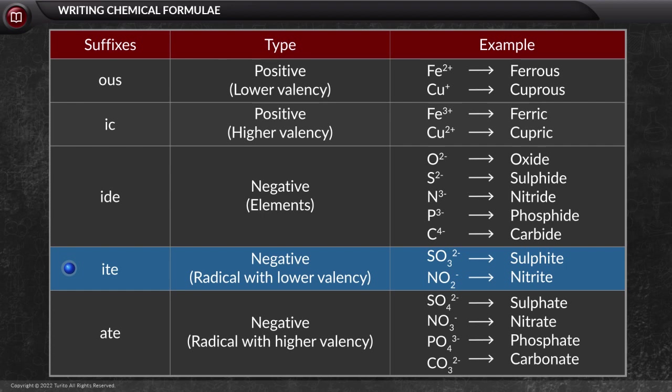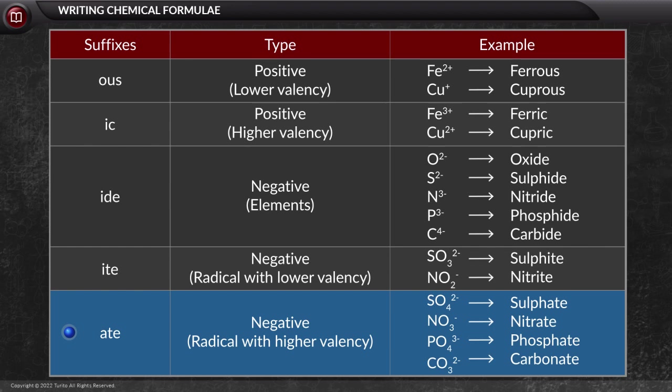For negative radicals with lower valency of the element, suffix 'ite' is used like in sulfite and nitrite. Similarly, with higher valency of element, suffix 'ate' is used. For example, sulfate, nitrate, phosphate, and carbonate.